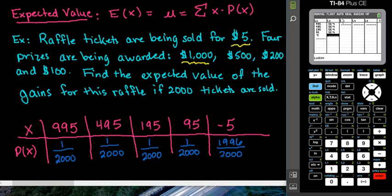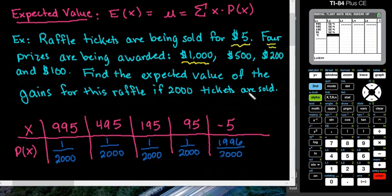Okay, and then for the last one, the 1996, because I know that I already had this set up for you when we came in, the 1996 came from the fact that since there are only four prizes being awarded, that means that out of 2,000 people, 1,996 people are not going to win a prize. So the majority of people that participate in this are not going to win a prize.